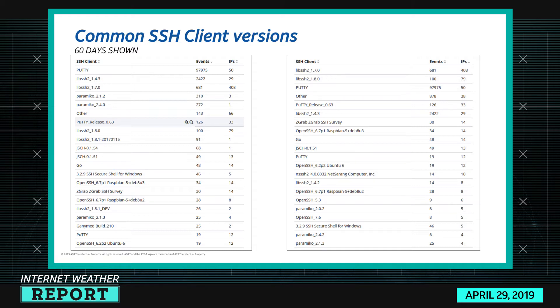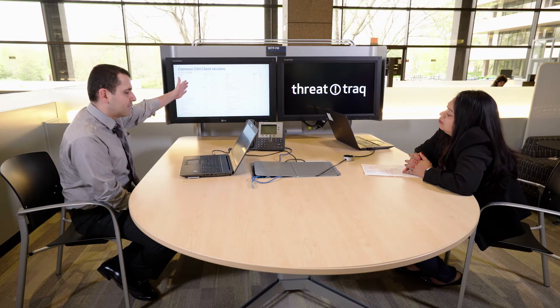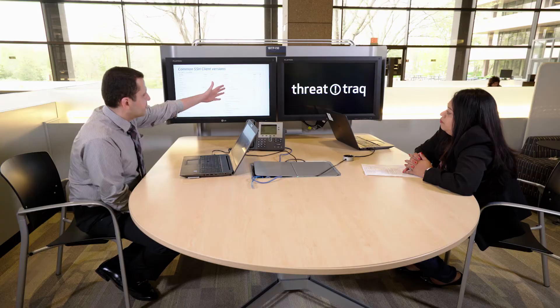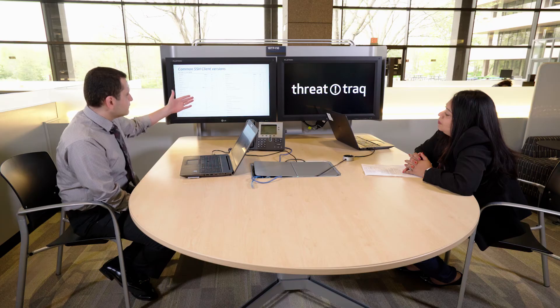I have the same chart sorted two different ways — one is the top 20 by number of events (volume), and the other is by number of IP addresses. There are so many different kinds of SSH clients in the metadata — I was never aware of this. We all know PuTTY, but there are many other SSH clients connecting to it.